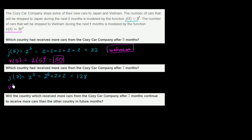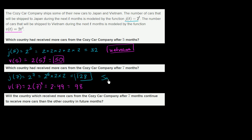And for Vietnam, v(7) is equal to 2 times 7 squared, which is 2 times 49, equal to 98 cars. So after seven months, Japan would have received more cars. Japan will have received more cars after seven months.